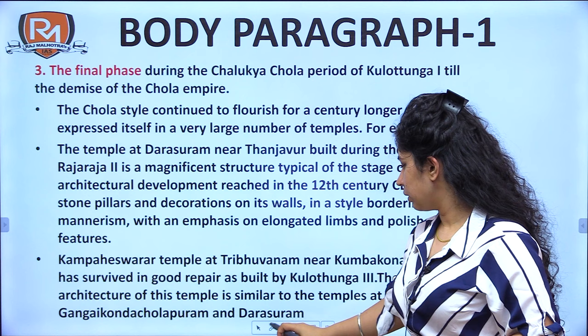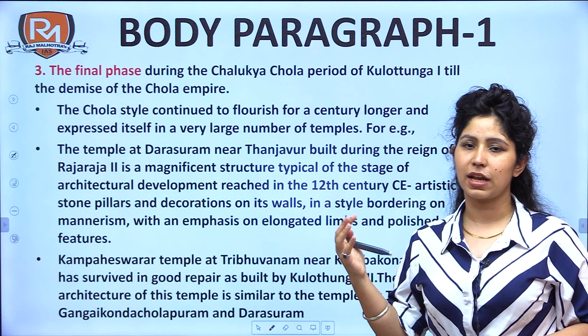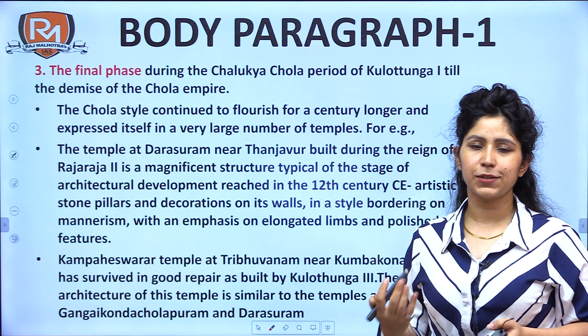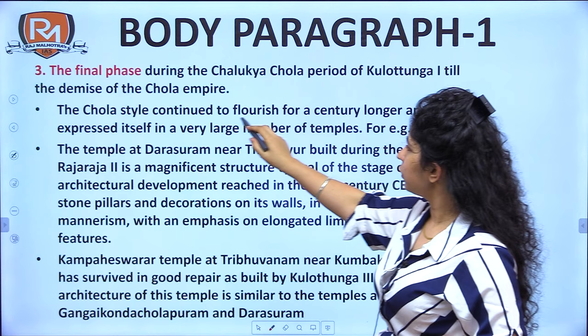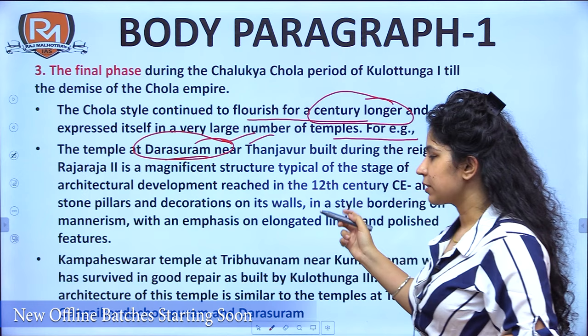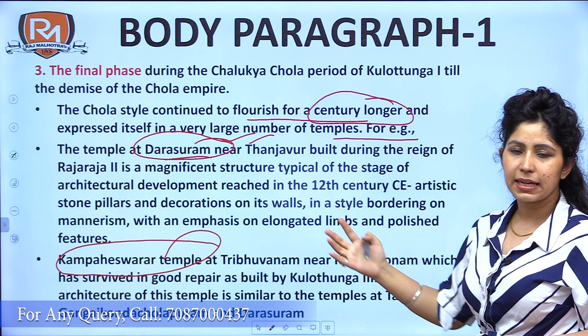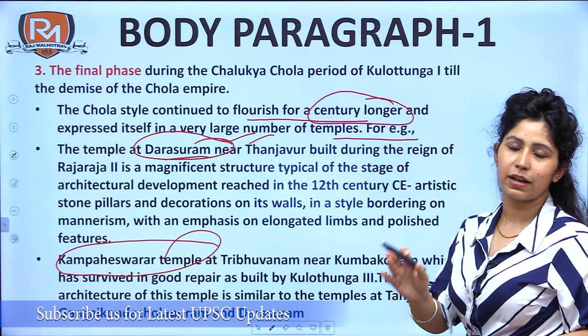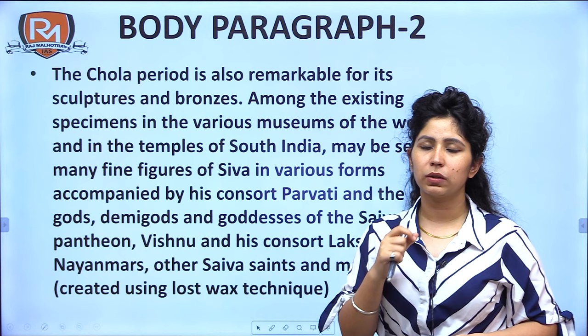In the final phase, after the passing of Raja Raj Chola and Rajendra Chola, one might expect decline, but art and architecture flourished for at least 100 more years. The Chola style continued to flourish for a century longer and expressed itself in a large number of temples — for example, the Dharasuram temple and the Kampaheshwara temple. These examples will definitely get you more marks in your answer.